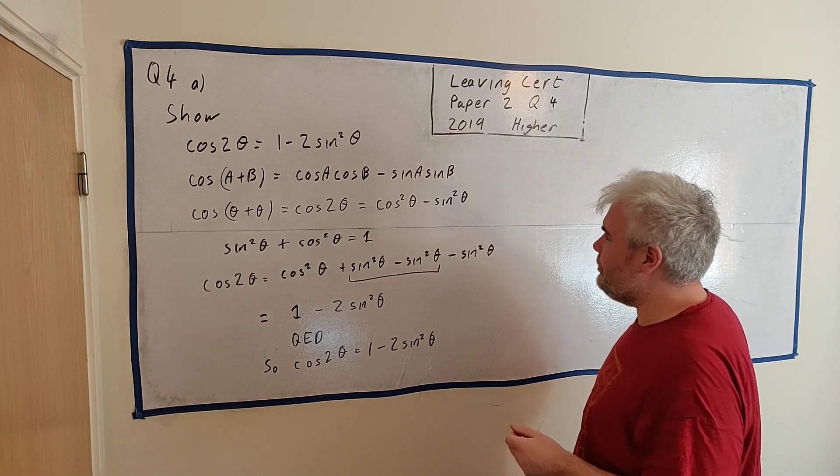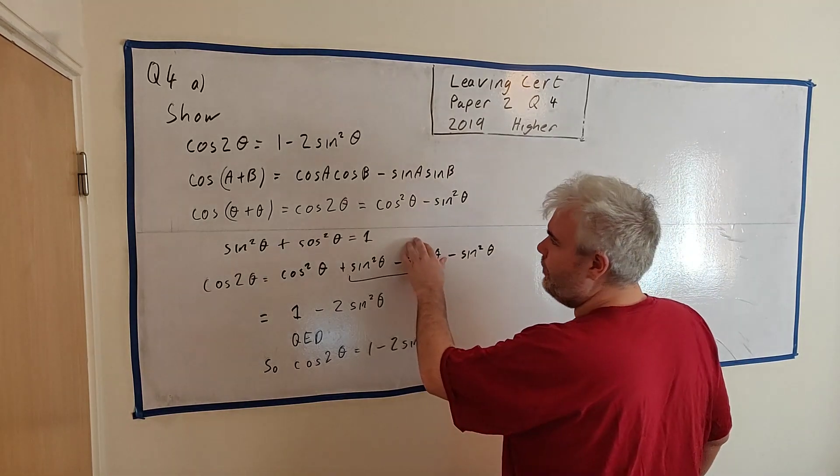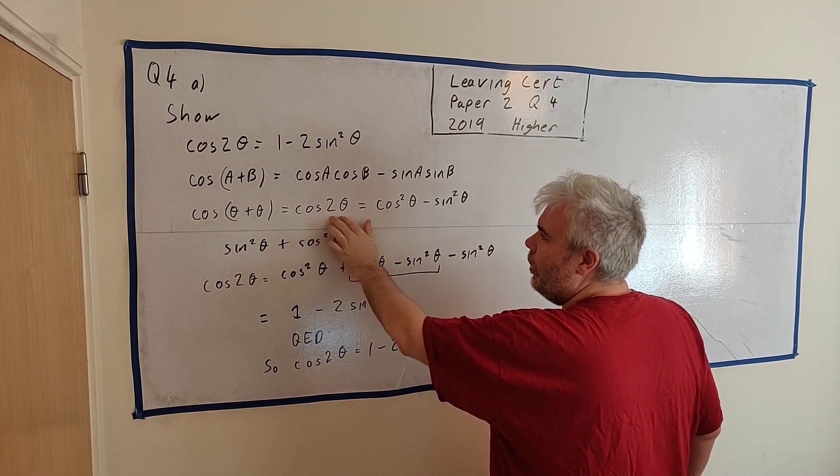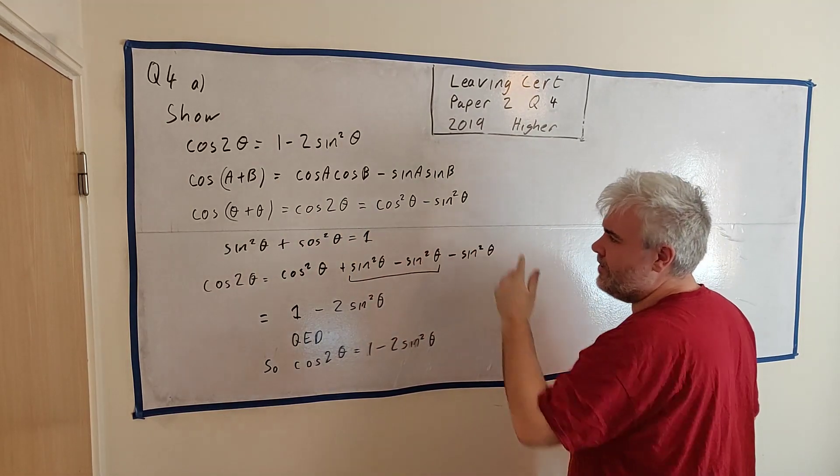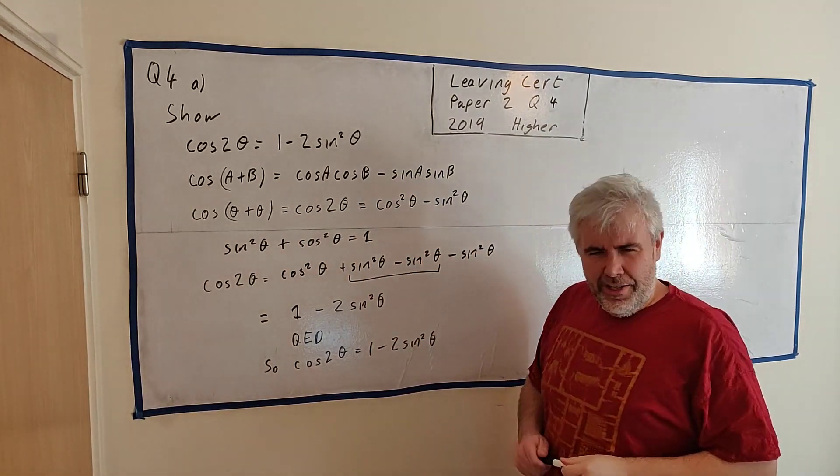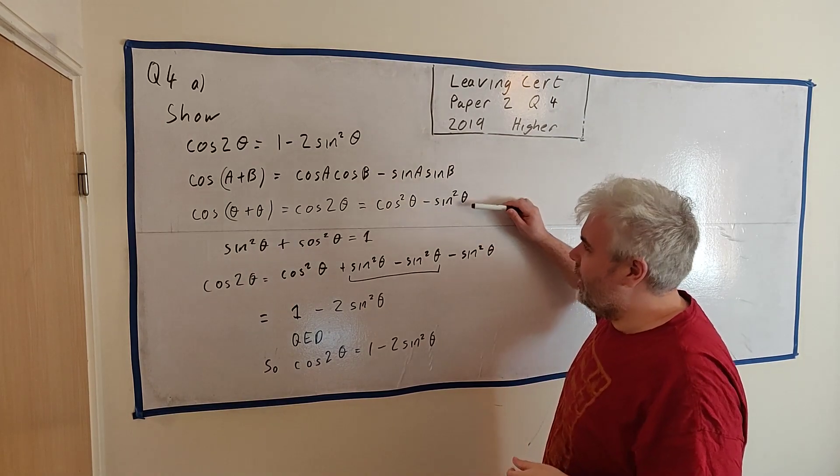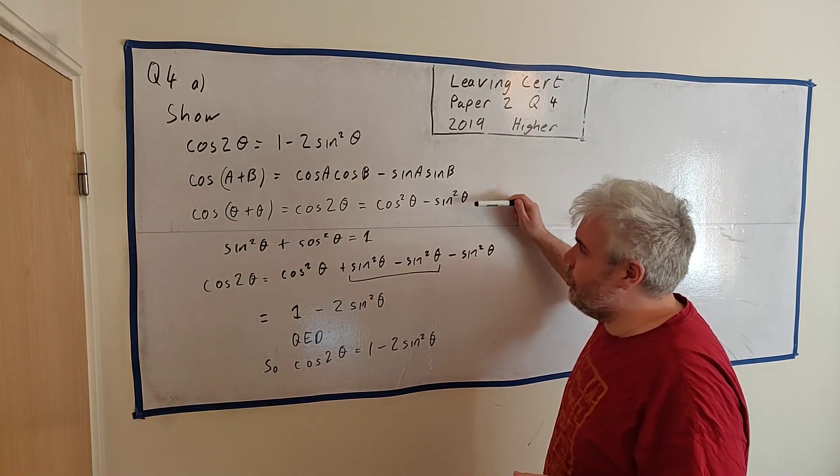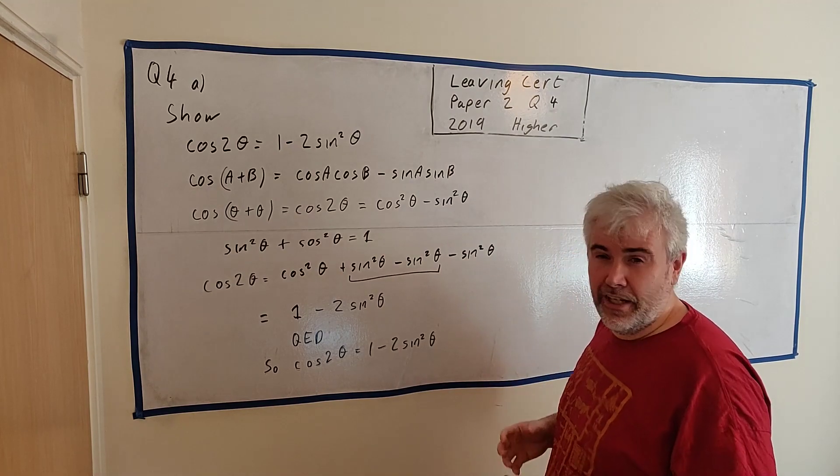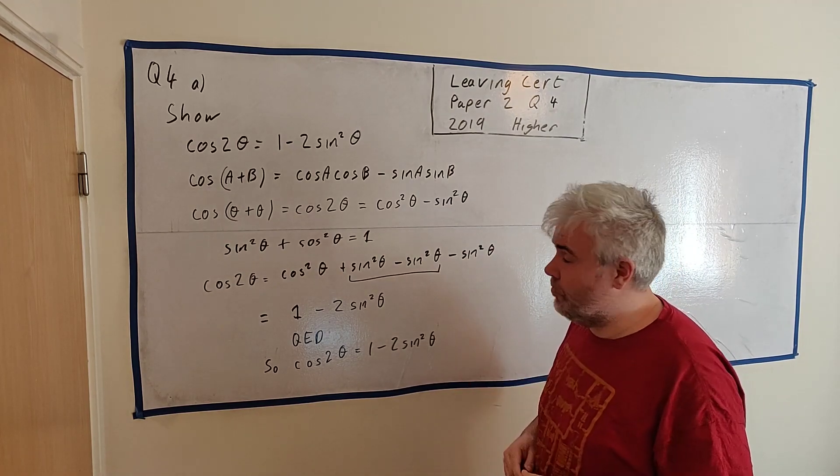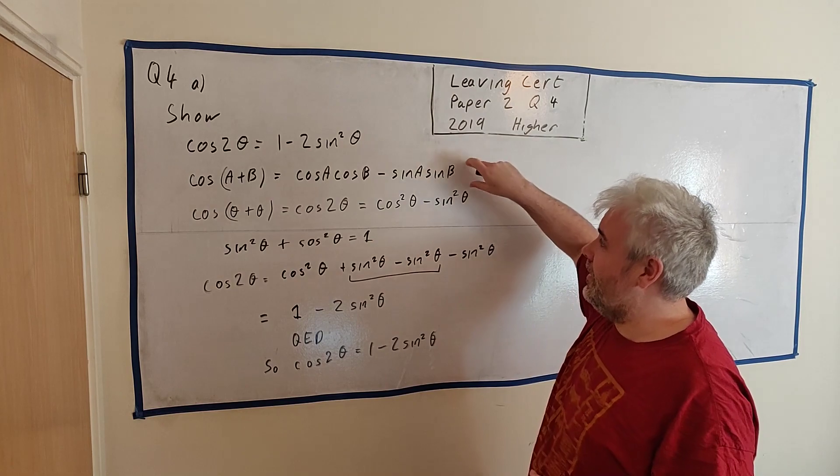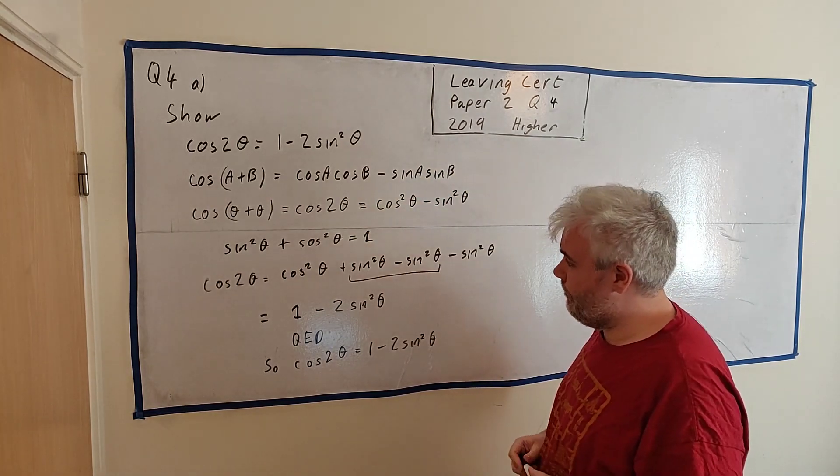I will point out something else as well. In your tables, you're also given this identity to begin with. Cosine of 2 theta is equal to this. The marking scheme seems to imply that that is not enough. You should start at this. I'm not so sure, but I think if you're given it in the formula tables, you're allowed to use it. You could skip this line here and go straight to this one.